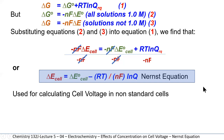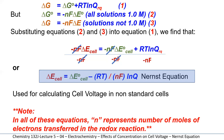The Nernst equation can also be used to calculate the cell voltage of a non-standard cell — one that has concentrations other than one mole per liter, or if it's using a gas, a pressure that's not at one atmosphere. N is the number of moles of electrons, and F is a Faraday, which is the charge on a mole of electrons, given as 96,485 coulombs per mole of electrons.